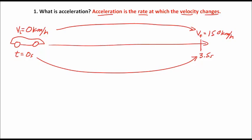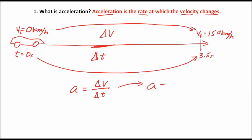That really explains what acceleration is: we have a change in velocity from zero kilometers per hour to 150 kilometers per hour, divided by a change in time. That is our definition of acceleration — acceleration is change in velocity divided by change in time. So the equation is: acceleration equals delta V divided by delta T, where delta is the Greek letter meaning 'change.'